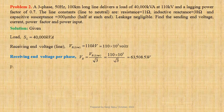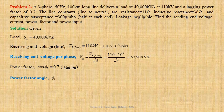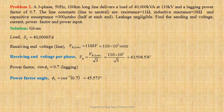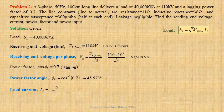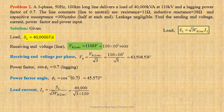Given load power factor cos φL equals 0.7 lagging. Power factor angle φL equals 45.573 degrees. We know that load SL equals √3 times Vr_line times IL. Therefore, load current IL equals SL divided by √3 times Vr_line. Using values, we get IL equals 209.95 ampere.